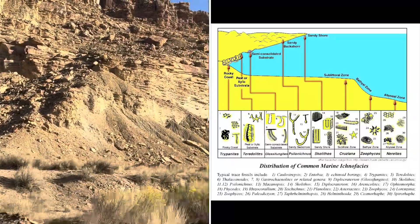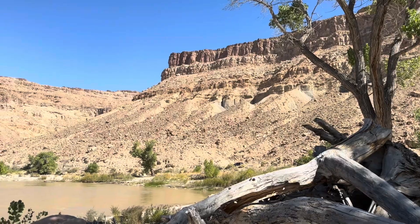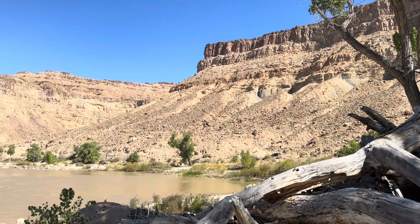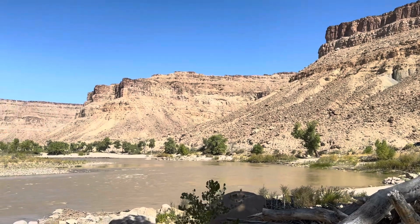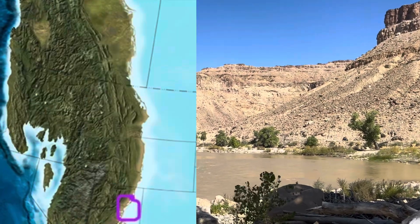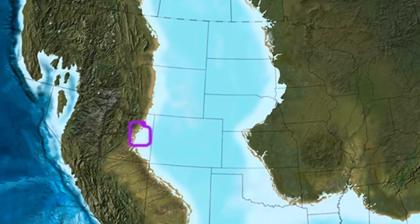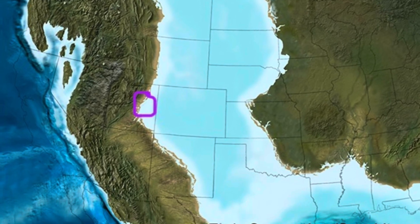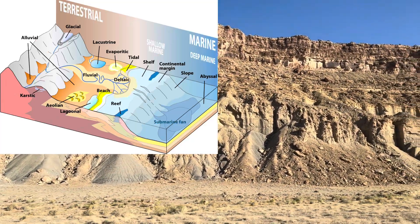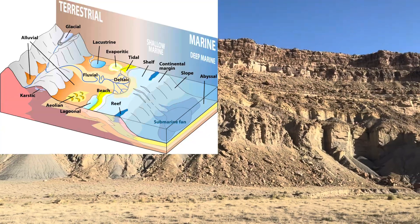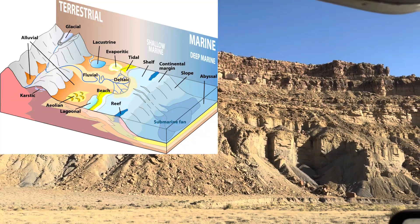That makes it pretty easy to identify shore faces compared to some other sedimentary environments. Now, most people might be confused about why I'm in the middle of the desert of Utah to look at marine shore face deposits. But that's because back in the Cretaceous, the landscape was a lot different. The Western Interior Seaway had flooded North America, and there was an open ocean to the east of where I am right now. That means a lot of the clastic sediment — sand, gravel, and silt — was washing down from the mountains to the west, being captured by rivers and transported out to the ocean where it formed deltas.